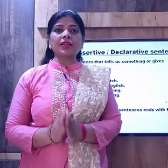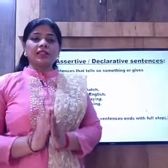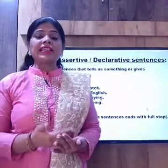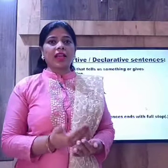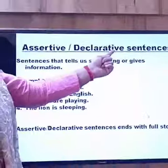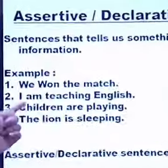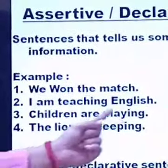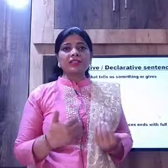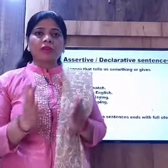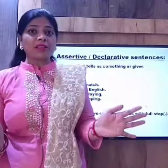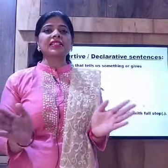Firstly, we will start with assertive or declarative sentences. These are the sentences which tell us something or give information, so we can call them telling sentences. Sentences that tell us something or give information are assertive or declarative sentences. For example: 'We won the match.' 'I am teaching English.' 'Children are praying.' 'The lion is sleeping.' In all these sentences, I am simply telling something or giving information — these are simple statements. Assertive or declarative sentences end with a full stop.